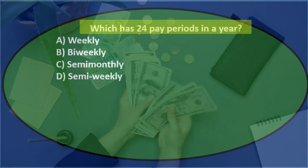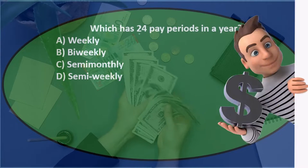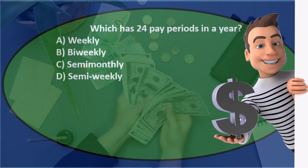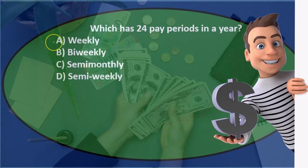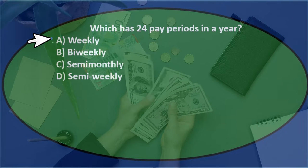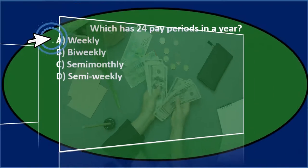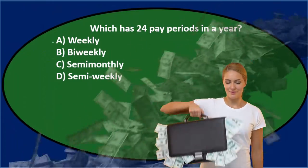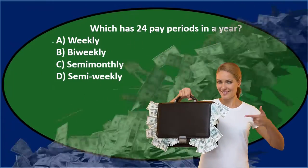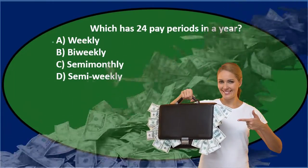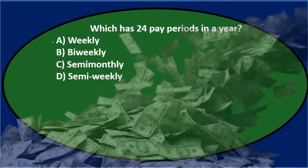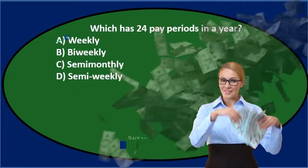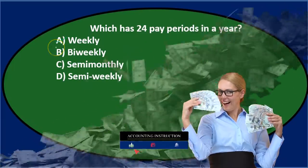So we get 24 paychecks — or the employer is paying 24 paychecks. If we think through these: A) weekly — are there 24 pay periods if we pay every week? It should be more than that. You should just know weekly means 52, because there are 52 weeks in a year. That's one of those payroll numbers that people need to know.